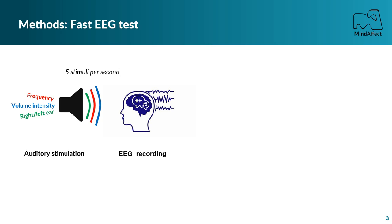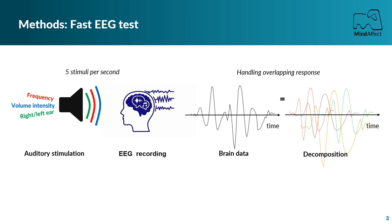In this new EEG test, participants are presented with stimuli of a given modality, meaning a pseudorandom combination of frequency, volume intensity, and lateralization at a fast rate of 5 Hz. This pseudorandom sequence, with minimized auto- and cross-correlation properties, ensures that the stimuli and the associated brain responses are decorrelated from each other. This allows the decoding algorithm to extract the amplitude of the evoked potential for each modality, even if those evoked potentials are overlapping.